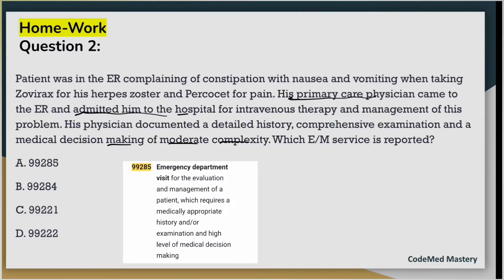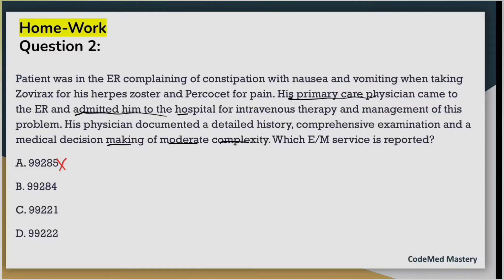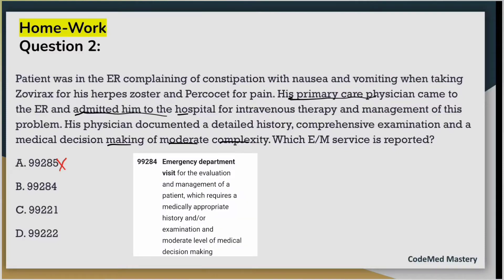99285 is for emergency department visit for E&M of a patient which requires a high level of MDM. But in our case this is not an emergency department visit — though the patient was in the emergency room, the primary care physician admitted him to the hospital and provided MDM of moderate complexity. So we cannot code an emergency department visit code; we eliminate option A.